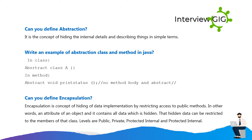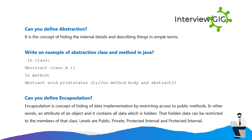Can you define encapsulation? Encapsulation is the concept of hiding data implementation by restricting access to public methods. In other words, an attribute of an object contains all data which is hidden. That hidden data can be restricted to the members of that class. Levels are public, private, protected internal, and protected internal.